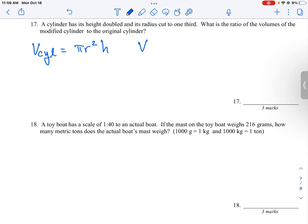Okay, so we can do another volume here, and we'll call this the modified cylinder. The height is doubled, so the height is going to go from h to 2h, and the radius is cut by one-third. So the radius is going to go from r to r divided by 3.